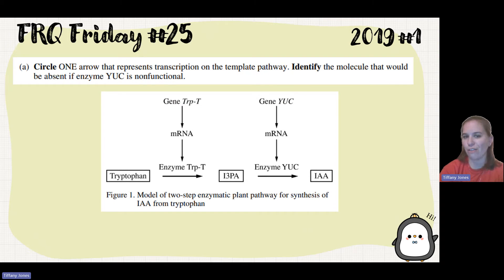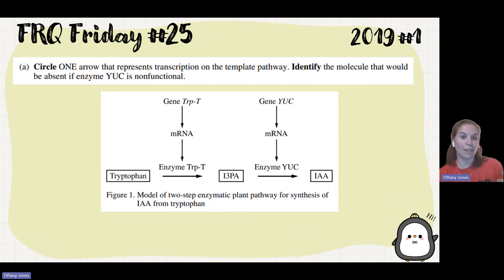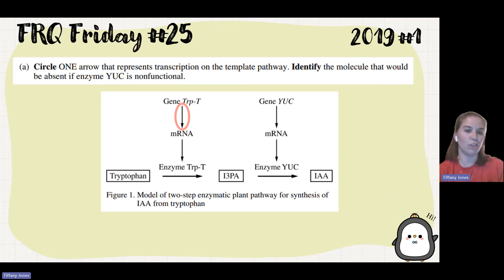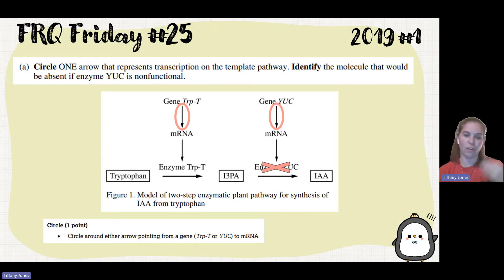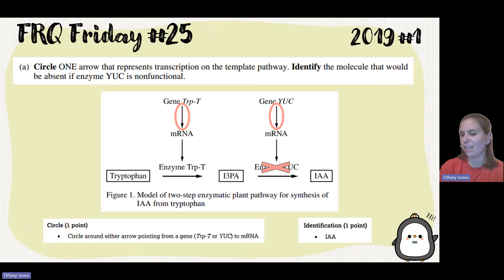Part A asks to circle the one arrow that represents transcription. Transcription is where we read the genes and synthesize an mRNA from them. There are two arrows you could circle — either arrow for gene trypte or gene yuck. Then it says identify the molecule that would be absent if enzyme yuck is non-functional. If enzyme yuck is absent, it can't speed up the reaction from I3PA to IAA, so IAA would be absent.